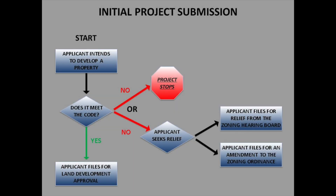For an Initial Project Submission, it would start with an applicant who intends to develop a property. When that happens, an analysis is done to determine if it meets the code. If the project meets code, then the applicant can file for land development approval. If the project does not meet code, the project either stops or the applicant would need to seek some form of relief.